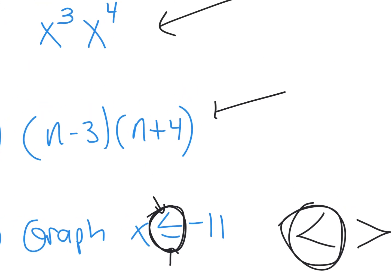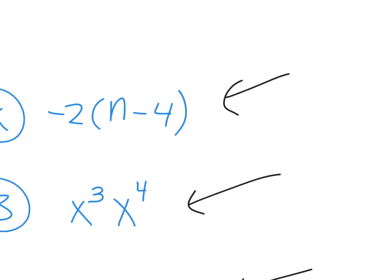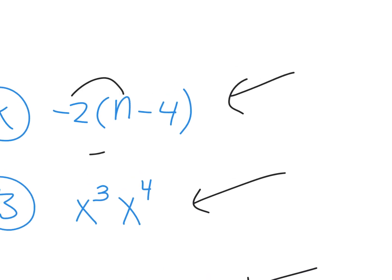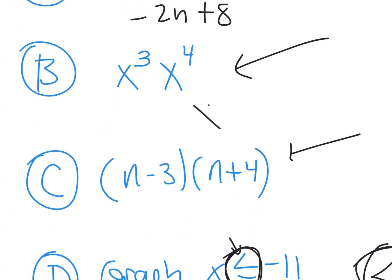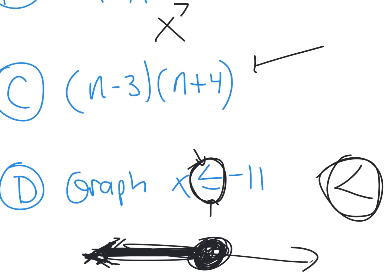I'm going to just do each of these for you to make sure you get this. That's negative 2N — most common mistake is to say negative 8. What is it actually? Positive 8. This one was x to the — on this kind you add them — x to the 7. Pay attention, because again, half the class last hour didn't know what to do.